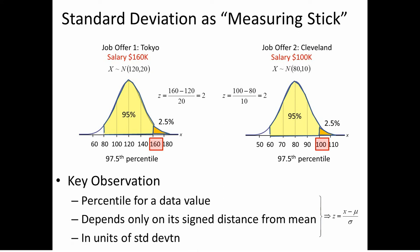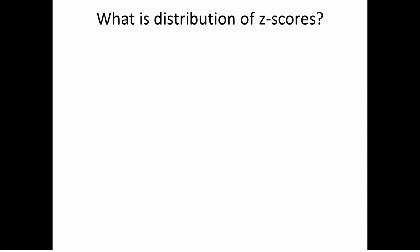The percentile tells us how likely a value is to occur, so a percentile is very important. When z-scores are integers between minus 3 and 3, the empirical rule can help us. But what if the salary had been $105? We couldn't use the empirical rule. We need to first ask: what is the distribution of the z-scores? Let's consider a coordinate transformation from the data value to the z-score.